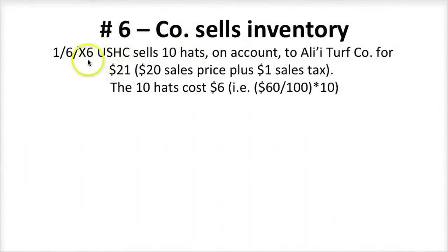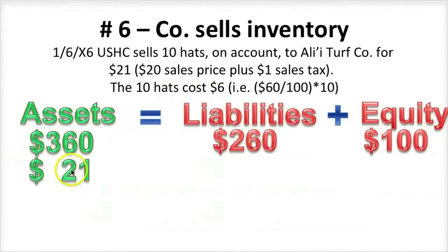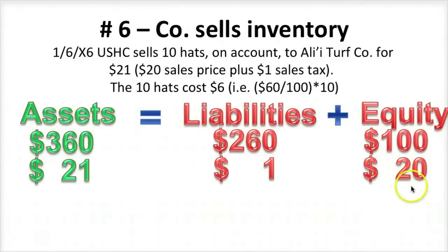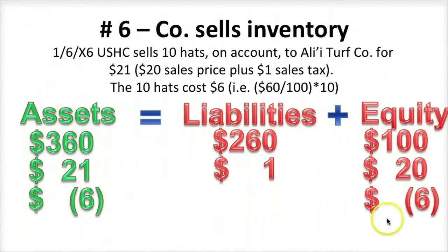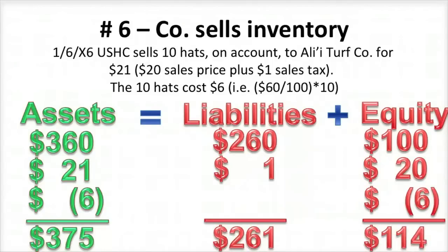On day six, the company sells inventory to a customer. USHC sold 10 hats on account to Ali'i Turf Company for $21: $20 is the sales price and $1 is sales tax, which must be submitted to the state government. The 10 hats cost $6. We added $21 representing the sales price and sales tax as a receivable — that's an asset. We owe $1 to the state as sales tax payable, and the other $20 increases owner's equity as revenue on the income statement. We gave up $6 of inventory, resulting in cost of goods sold expense. The margin on the sale was $14, belonging to the owners. Total assets are $375, liabilities $261, and equity $114.